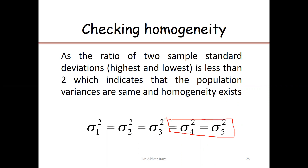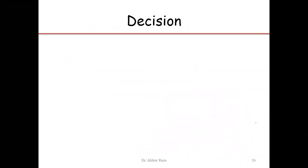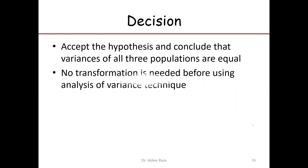We have only three variances in this situation, comparing variance in brand A, variance in brand B, and variance in brand C. The ratio of the column standard deviations can be checked. We accept the hypothesis and conclude that the variances of the three populations are the same. No transformation is needed before using the analysis of variance technique.